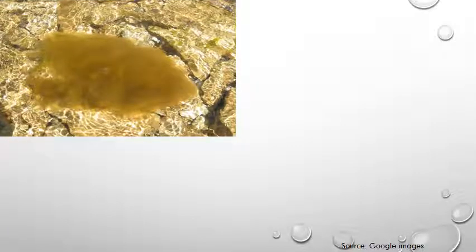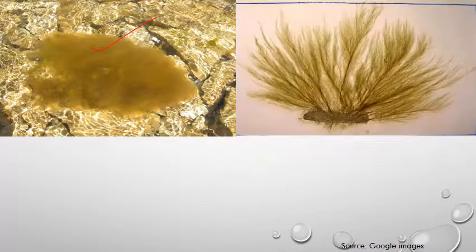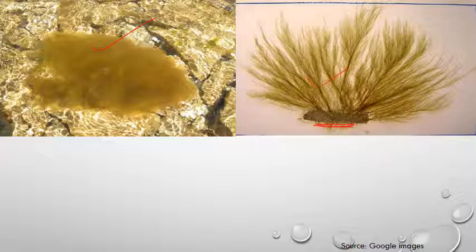If we look at Ectocarpus with the naked eye, it appears slightly brownish in color and mostly grows in marine water. It has a fibrous, mat-like structure. In another image, we can clearly differentiate the prostrate horizontal system and the erect system which arises from it.